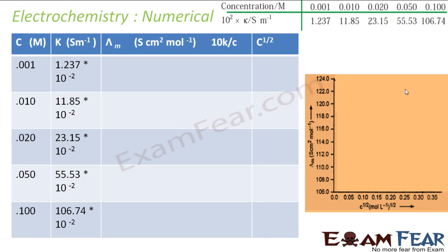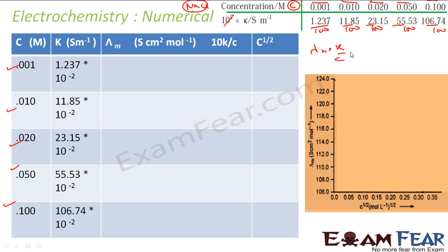Here is the NaCl concentration table with c values: 0.001, 0.01, 0.02, 0.05, and 0.1. The conductivity is given as 100×k, so everything is divided by 100. Now λm = k/c, where k is in siemens per meter. To convert to siemens·cm²/mol, I divide k by 100 to get siemens per centimeter.